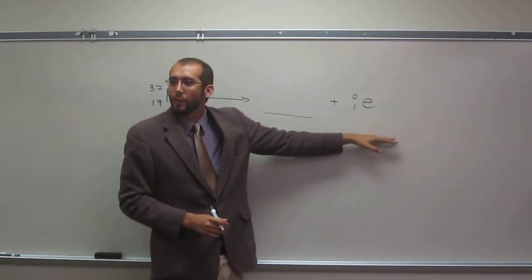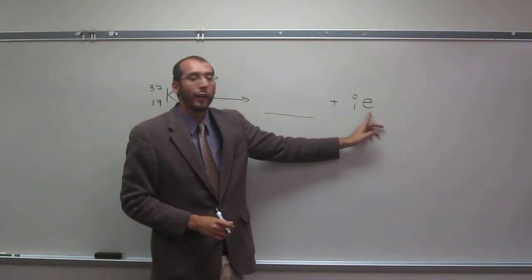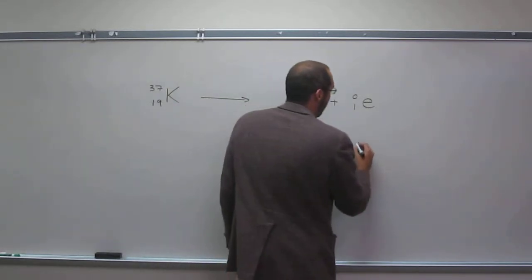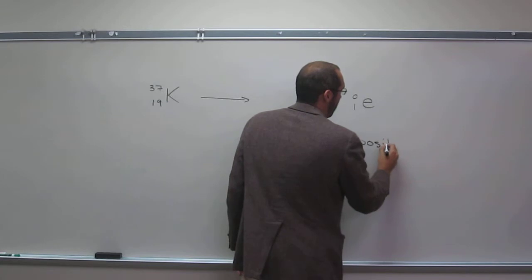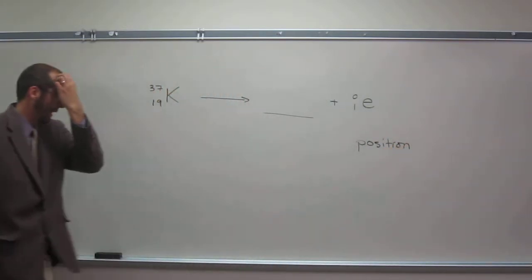Does anybody know what this particle is called? Do you guys remember? It's an electron that's got a positive charge, so we call it a positron. It's like an anti-electron.